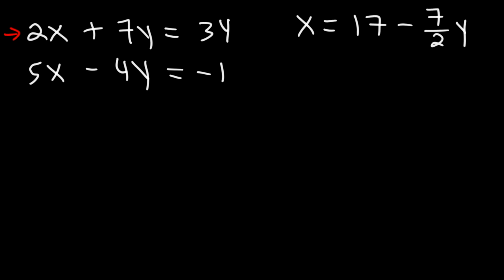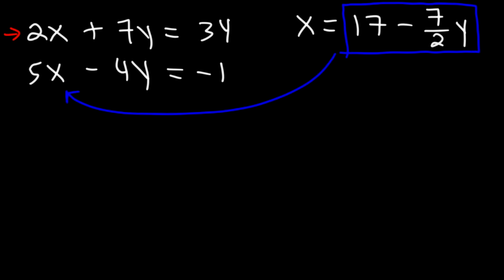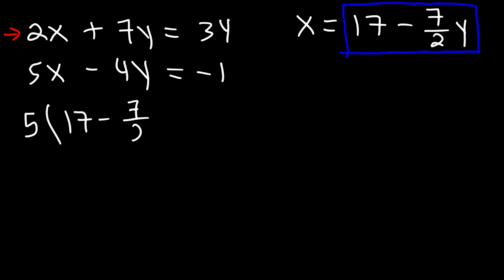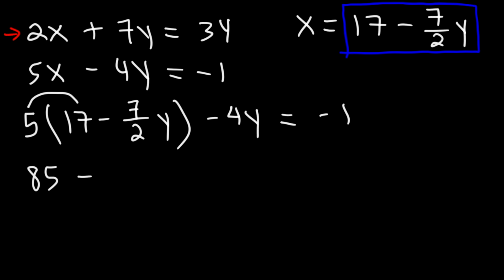Because we got this expression from the first equation, we plug it into the second equation. Replace x with 17 minus 7 over 2 times y: 5 times (17 minus 7 over 2 times y) minus 4y equals negative 1. Distribute the 5: 5 times 17 is 85, and 5 times negative 7 over 2y is negative 35 over 2y. Then we have negative 4y and negative 1.